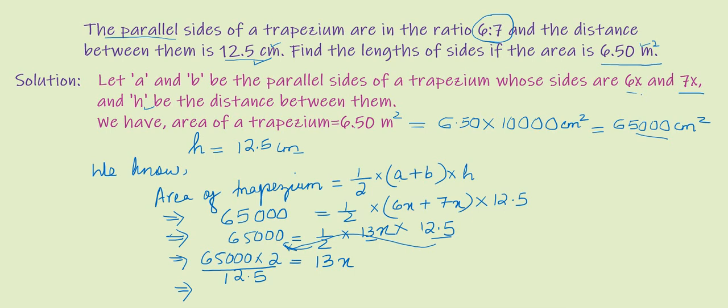Multiplying: 2 times 65,000 gives 130,000, and this equals 13x times 12.5.